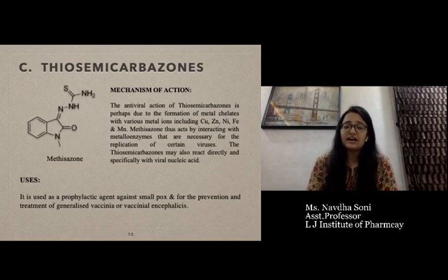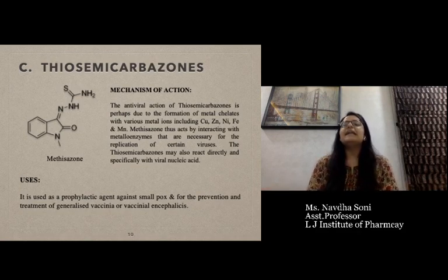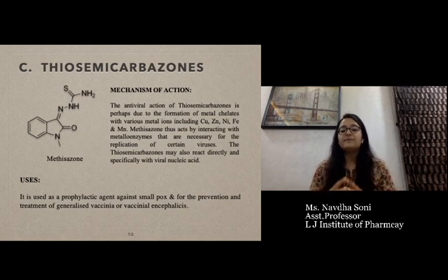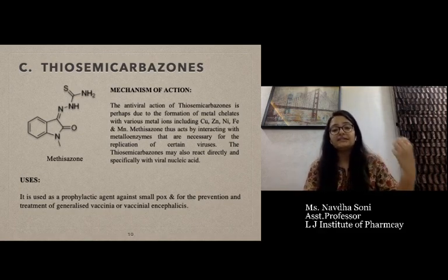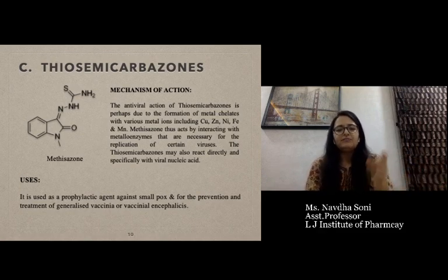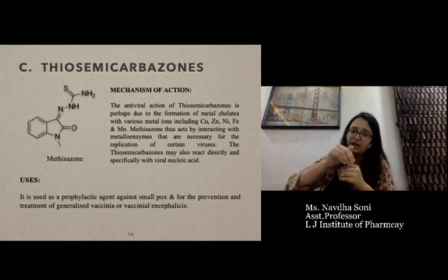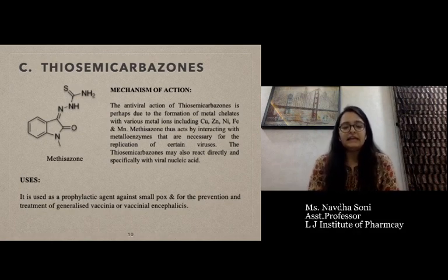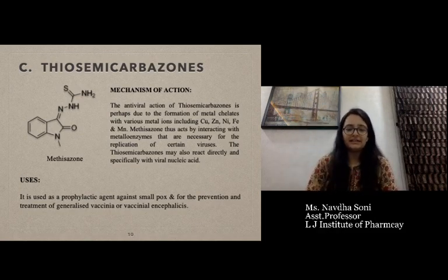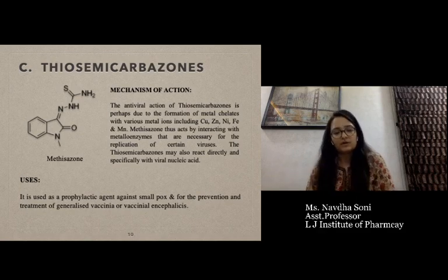The third class is thiosemicarbazone. The example is methisazone. The antiviral action of thiosemicarbazone is perhaps due to the formation of metal chelates with various metal ions like copper, zinc, nickel, iron, and manganese. Methisazone acts by interacting with metalloenzymes necessary for the viral replication process. Thiosemicarbazone may also react directly and specifically with viral nucleic acid. It is used as a prophylactic against smallpox and for the prevention and treatment of generalized vaccinia.